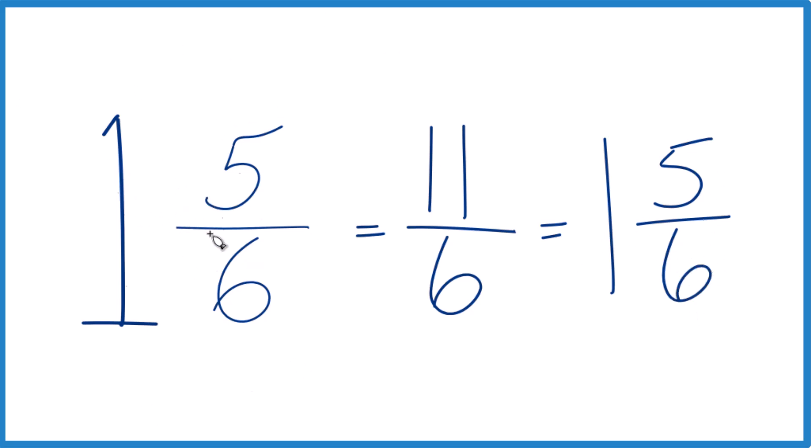So when we write the mixed number 1 and 5/6, we end up with the improper fraction 11/6. And these have the same value. They're equal to each other. They're equivalent. It's just that we've written 1 and 5/6, that's a mixed number, and this is a different representation. It's called an improper fraction. Thanks for watching.